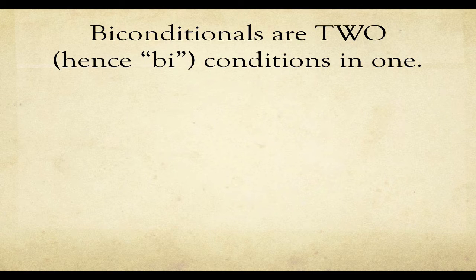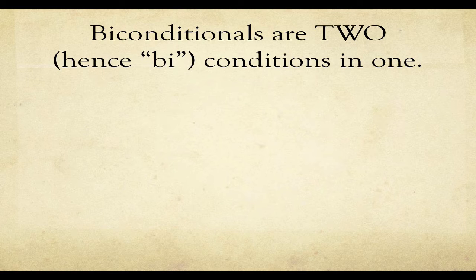A biconditional is two conditionals in one. That's why it's called 'bi' — as in bicycle having two wheels, or bipolar as in having two poles. So biconditional means it's got two conditions. Let's start by looking at it as two separate conditions.